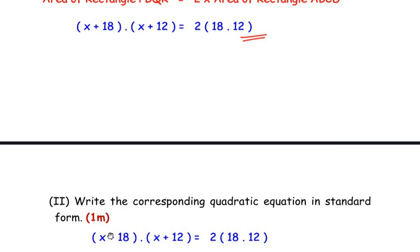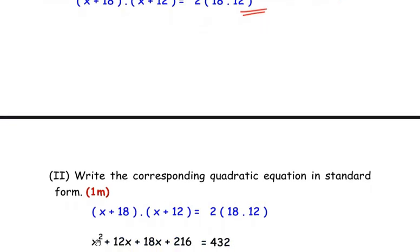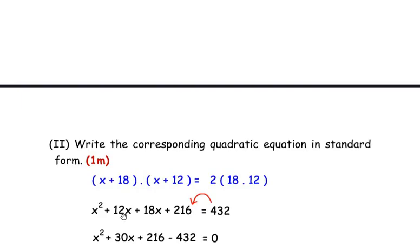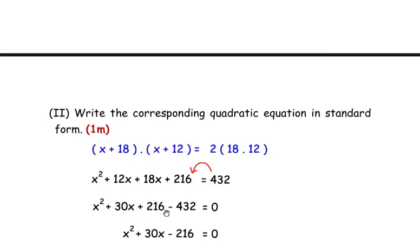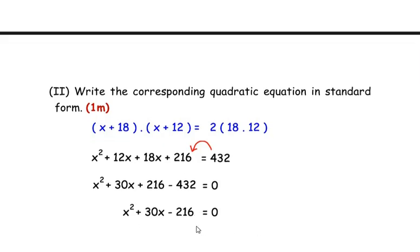Expanding: x × x gives x², x × 12 gives 12x, 18 × x gives 18x, and 18 × 12 gives 216, equal to 2 × 18 × 12 = 432. Bringing 432 to the left side: x² + 30x + 216 − 432 = 0. Simplifying: x² + 30x − 216 = 0. This is the answer in standard form.